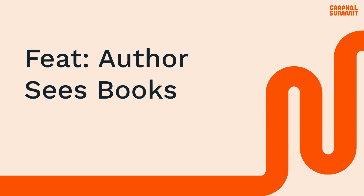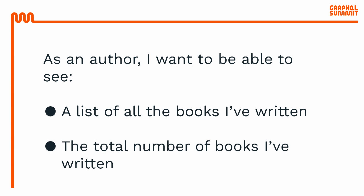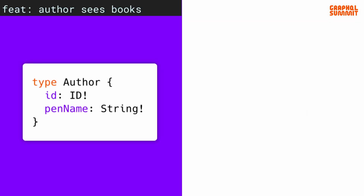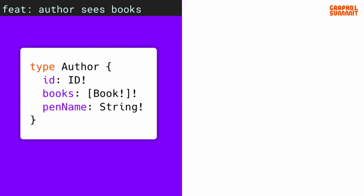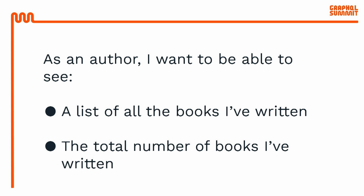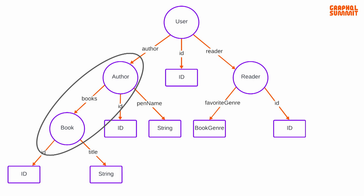Now that we've established some basic types, it's time to build a feature. For this feature, we have a user story: as an author, I want to be able to see a list of the books that I've written and the total number of books I've written. We have our author type, and to expose a list of their books, we're going to need to add a books field. Then we can write a query to show an author's list of books. Since the list of books is a list type, the client can just get the length of the list to find the total. Book and author are now directly connected by that new books field.